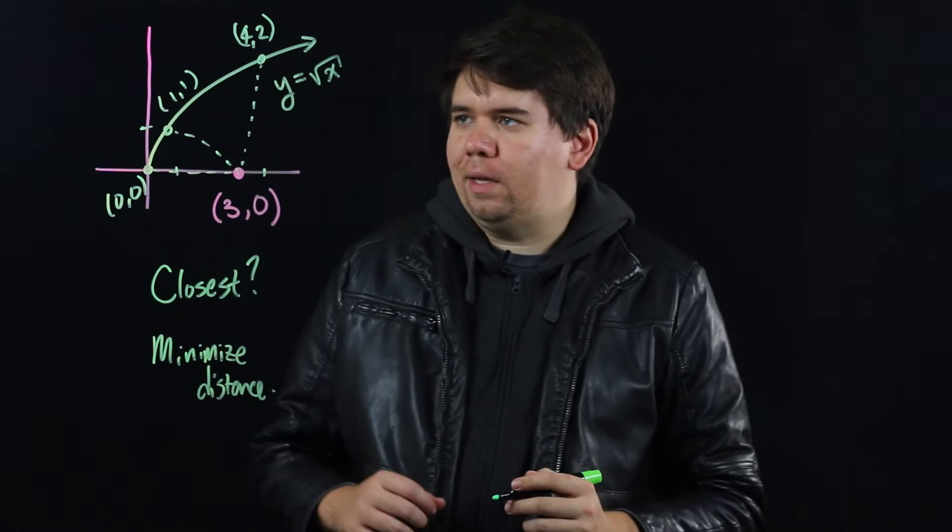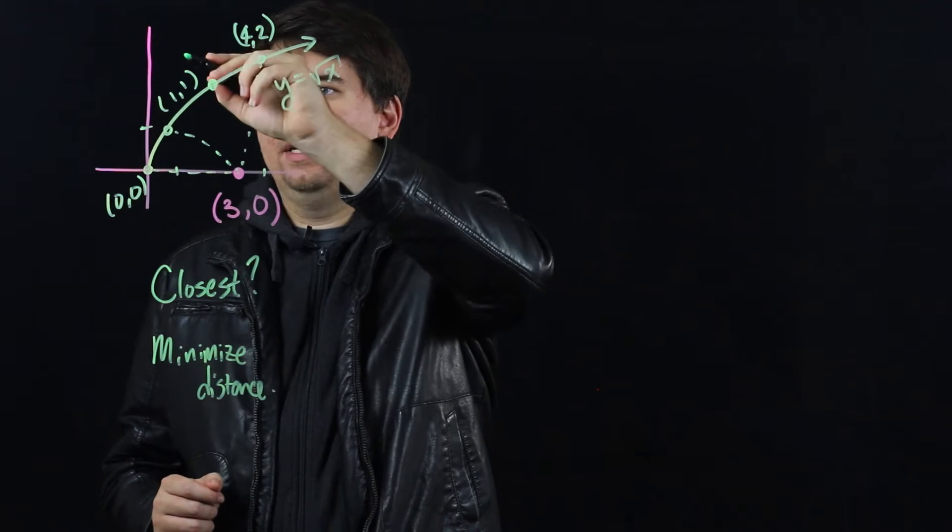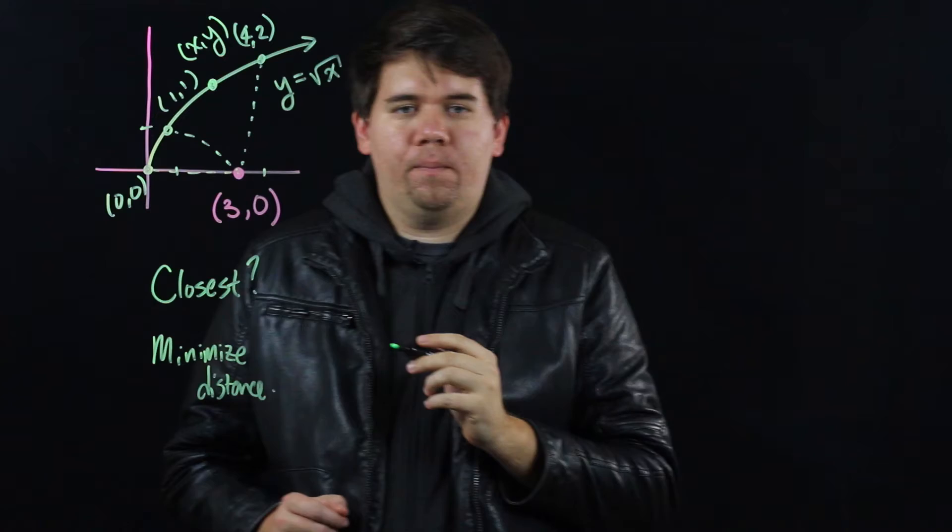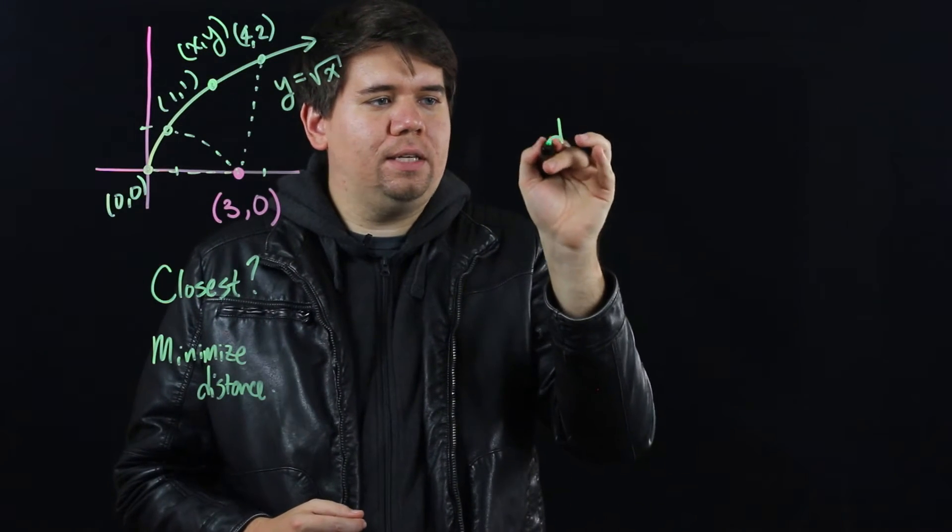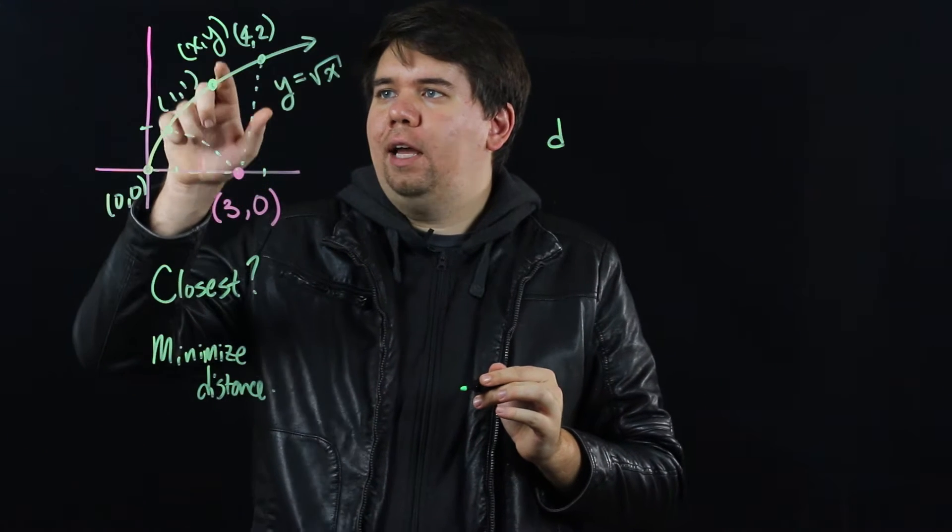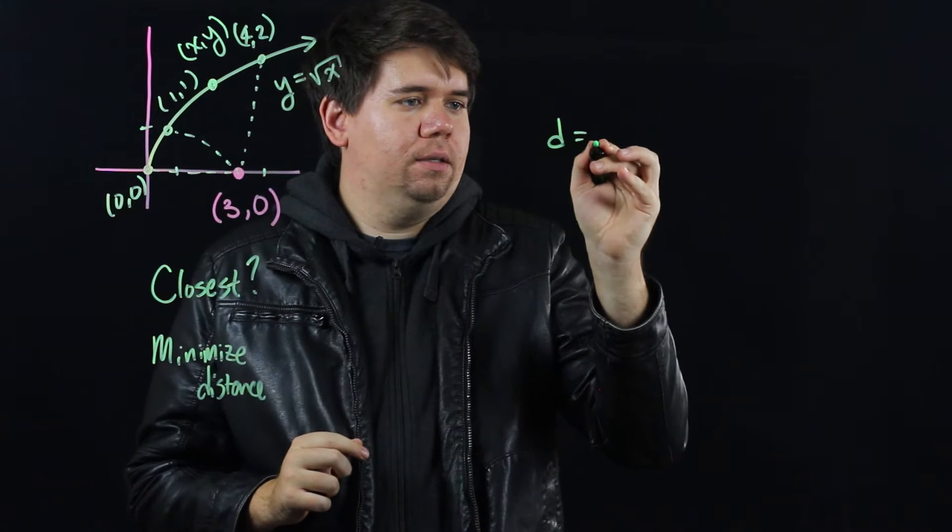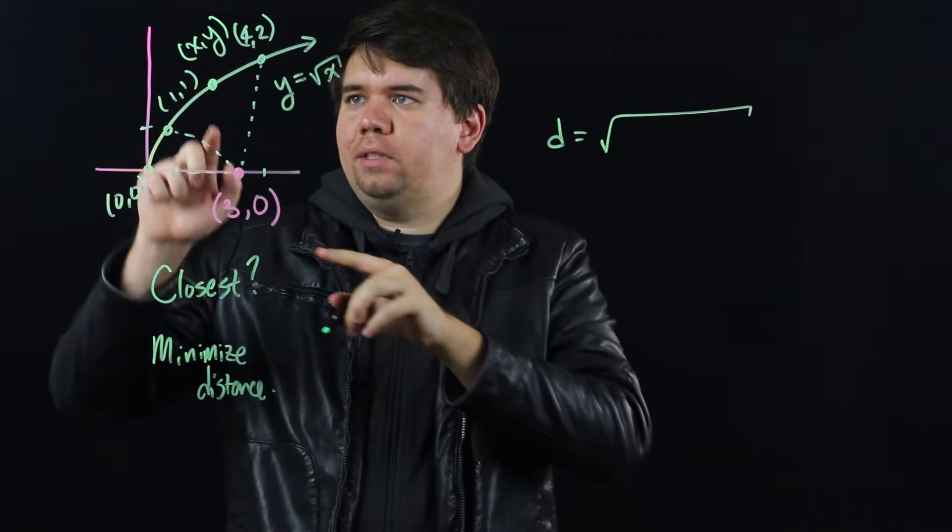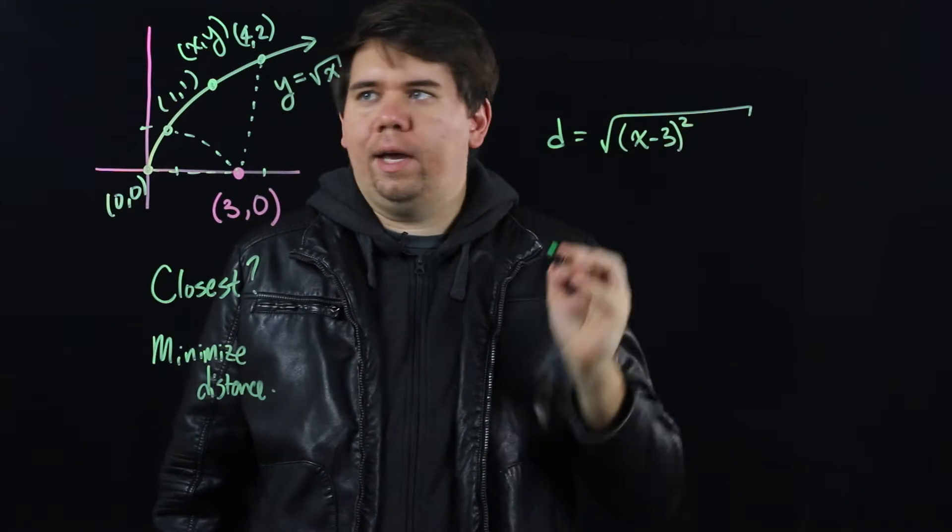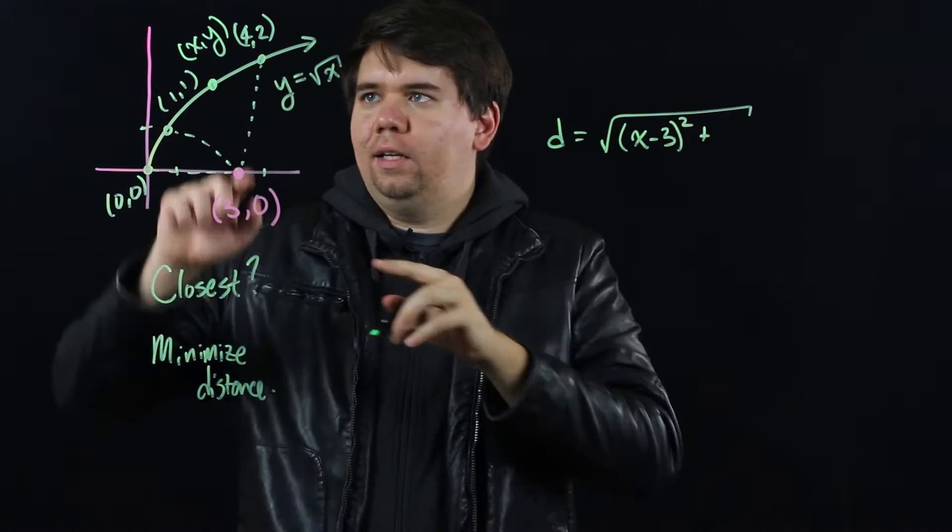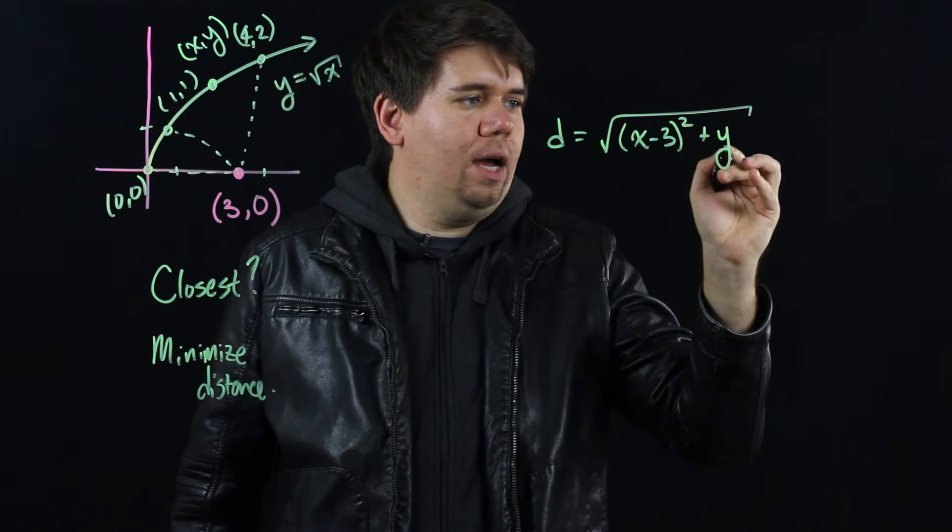Let's give some names to things. Let's pick an arbitrary point on this graph, say some point (x,y). Then we can describe the distance, I'll call it d, between (x,y) and (3,0). It's just given by the formula: the difference between the x values, (x-3) squared, plus the difference between the y values, (y-0) which is just y squared.